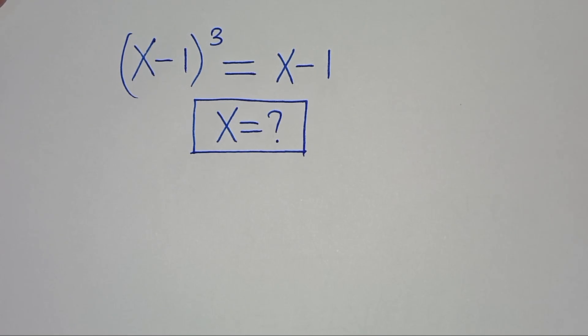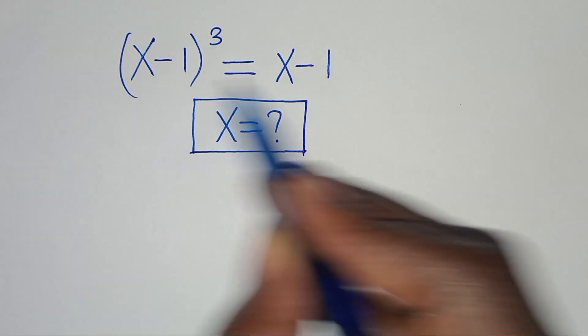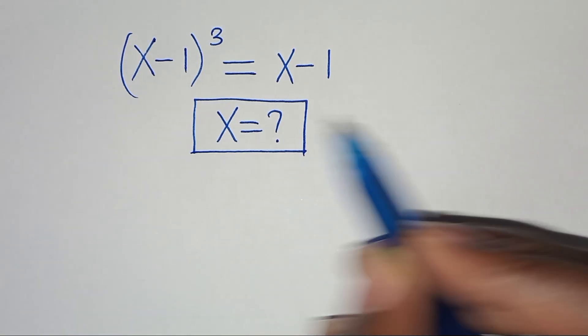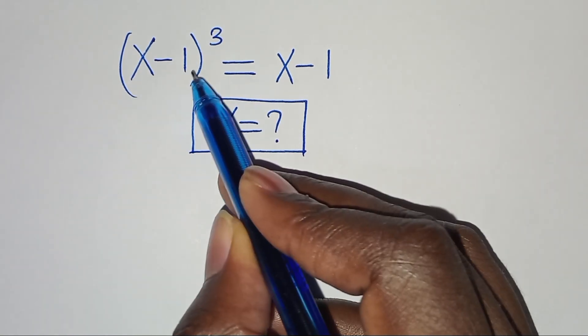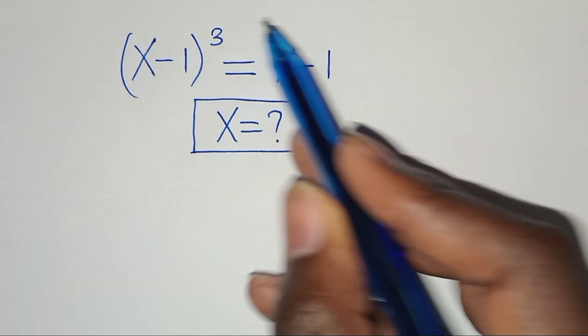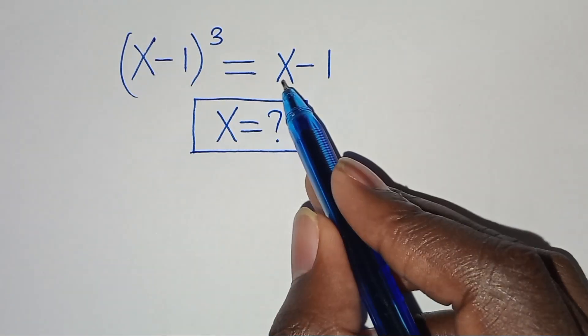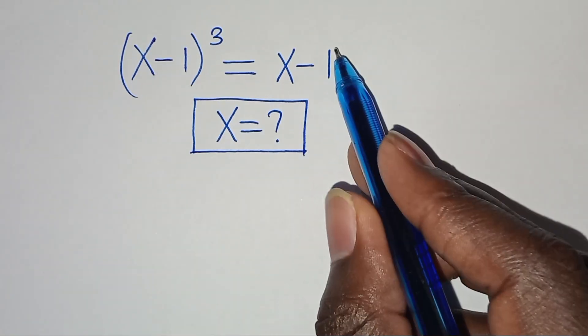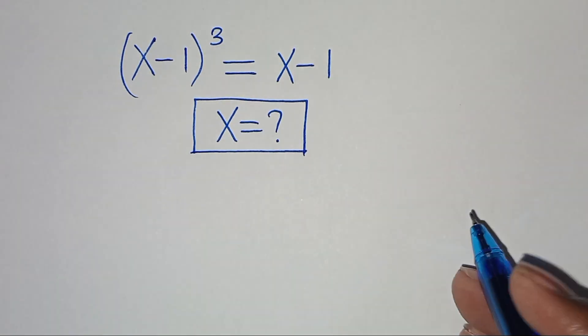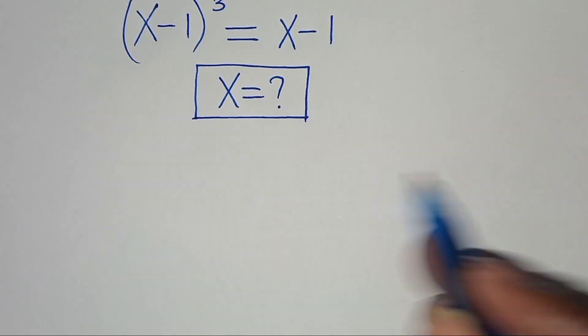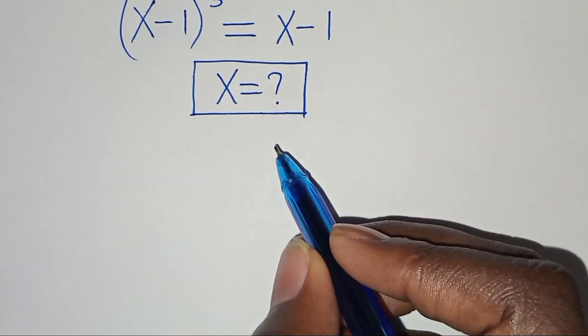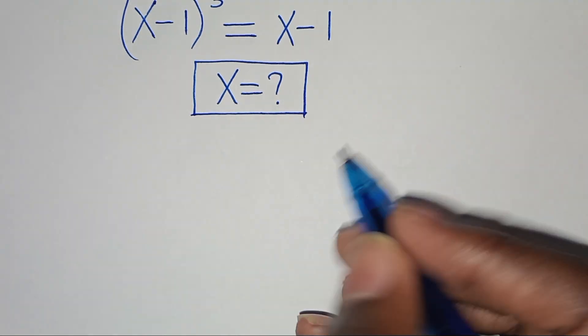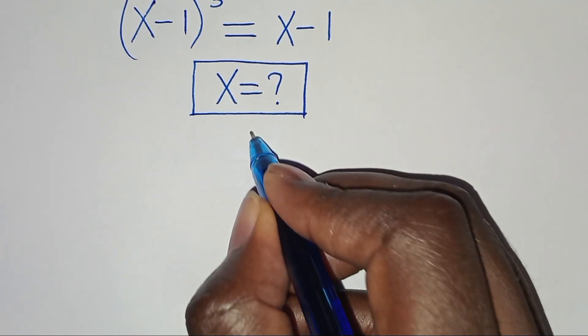Hello everyone, you are welcome to solve this nice algebra problem, which is x minus 1 to the power of 3, this is equal to x minus 1. So what is the value of x, or what are the values of x?